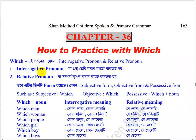Interrogative pronoun is a little bit complicated, and the relative pronoun is also a little bit complicated. So, this is the subject form, and the objective is the positive form. Subject form, which is objective, which is a positive form?